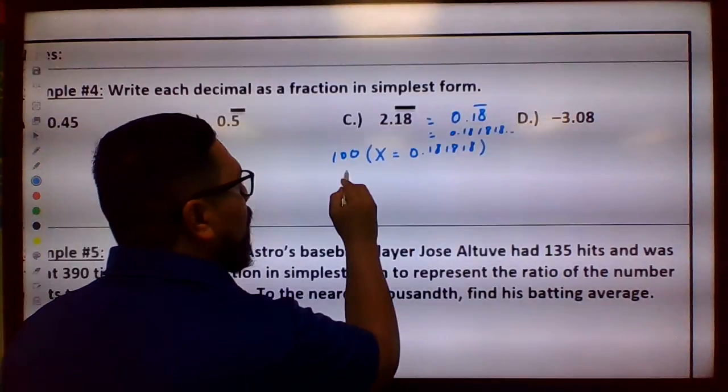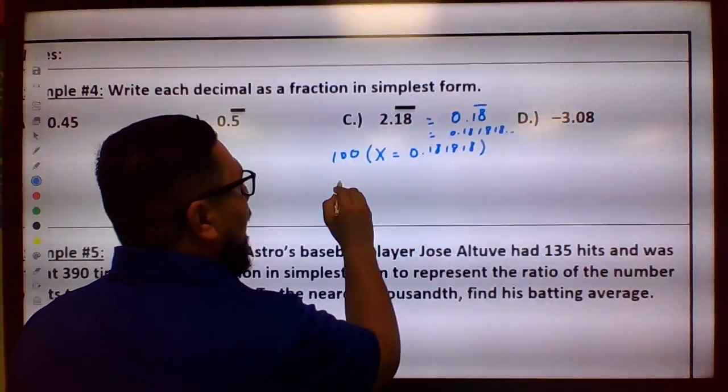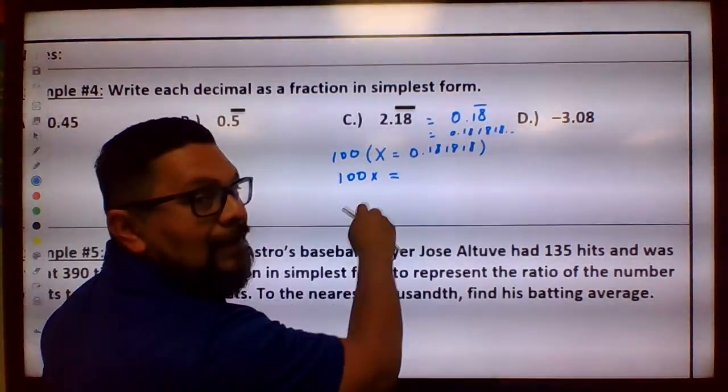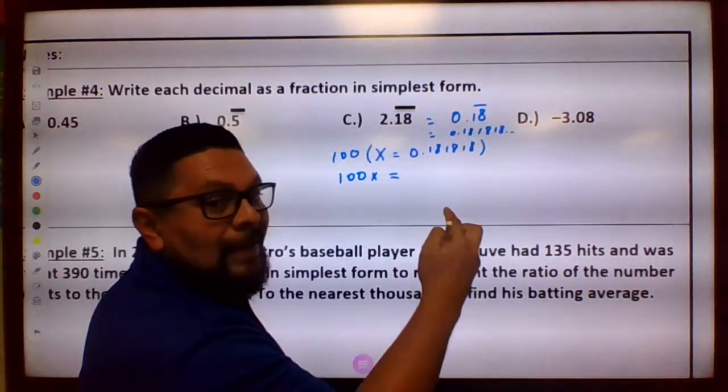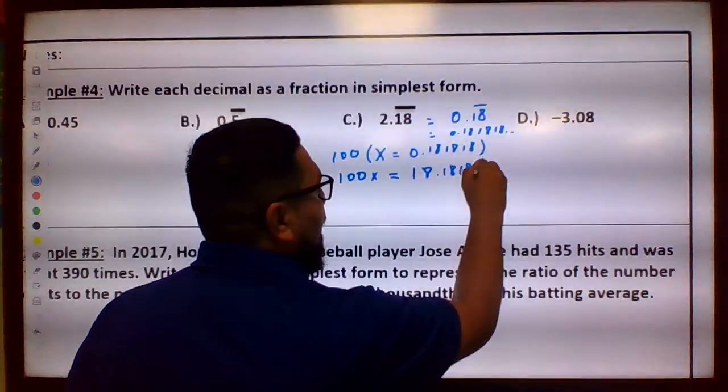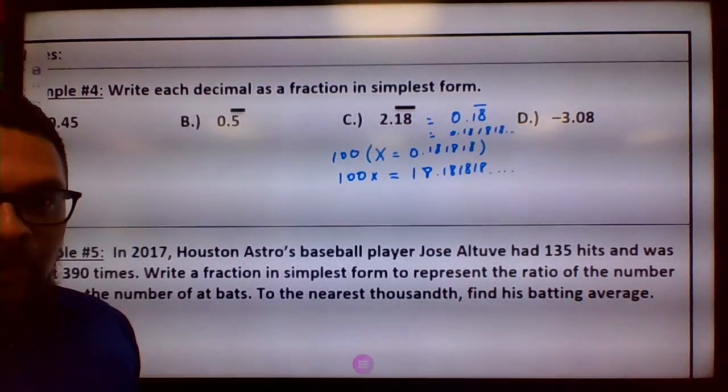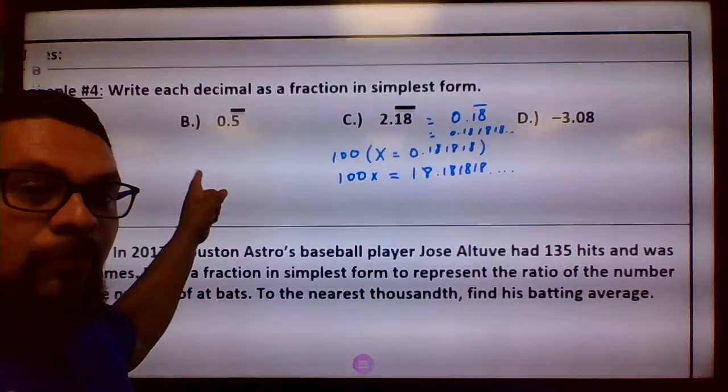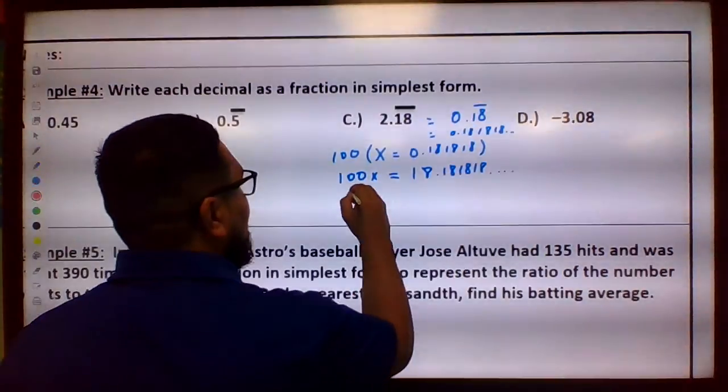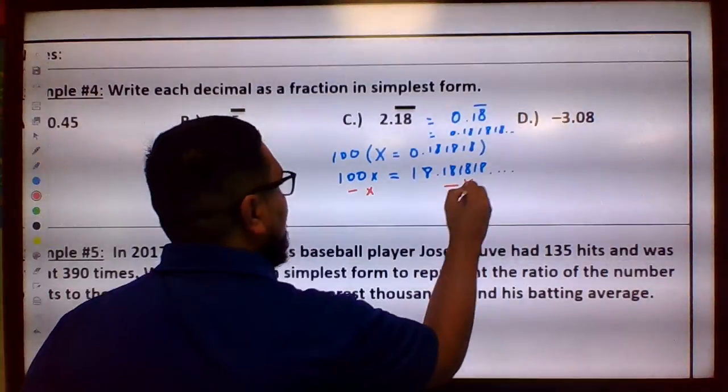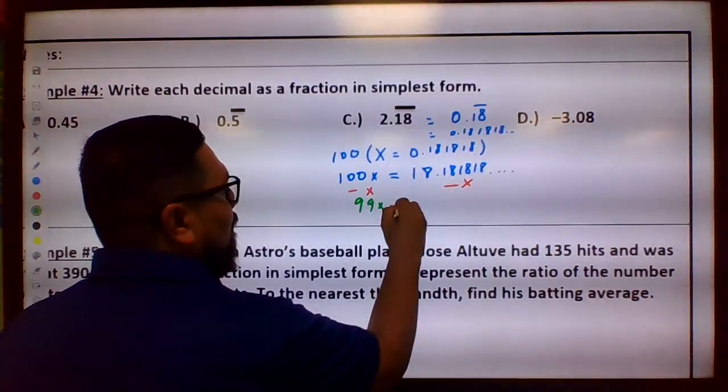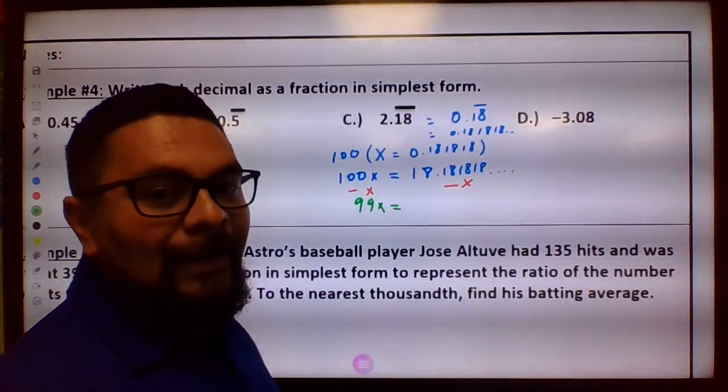So then we get over here 100 times X is 100X, and then 100 times this, you move the decimal twice, so it's going to be 18.181818. And then we do what we did over here, we subtract X. So minus X minus X. Once we do that we're going to get 99X, because if you have 100 x's and you take away 1x, you get 99x.